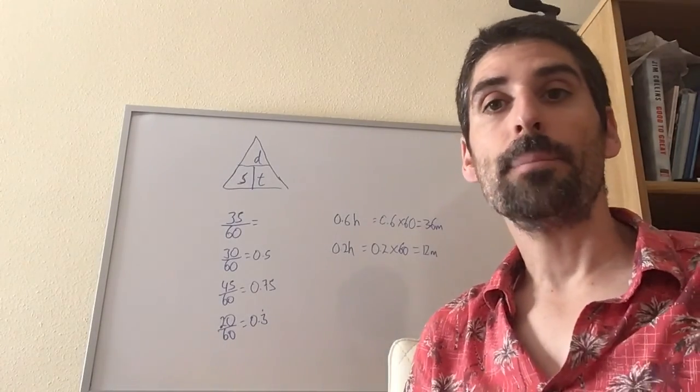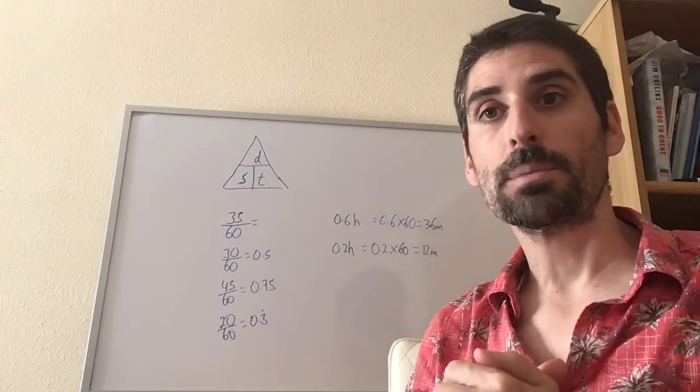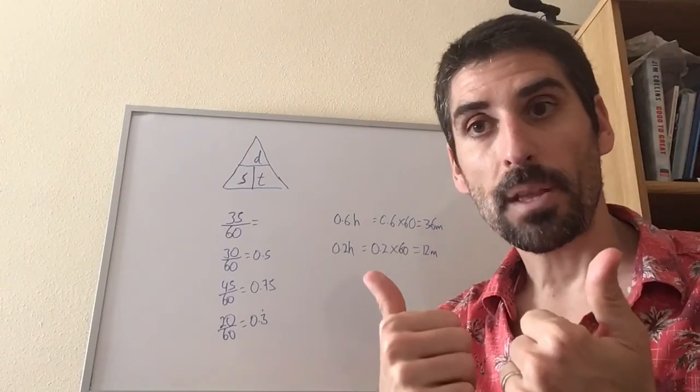So these are a few examples of how to change minutes into hours and how to change hours into minutes and how to use the formula triangle. So all those things with the example, I hope it makes sense. Take notes, write the examples nice and neat in your books please, and let me know if you've got any problems. Excellent.